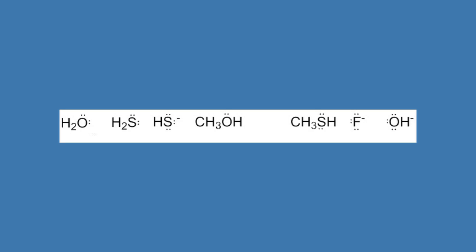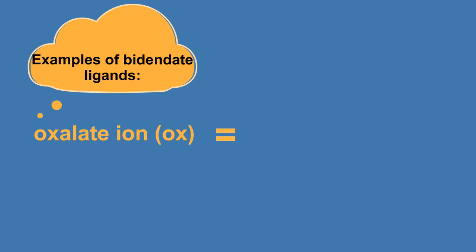Part 2. The following are examples of monodentate ligands since they donate one lone pair of electrons to a given metal ion. H2O, H2S, HS-, CH3OH, CH3SH, F-, and OH-.